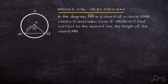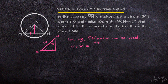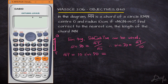Question 48 in the same year, 2016. We are given MN as the chord of a circle with center O and radius 10 cm. We are asked to find the length of the chord MN. We introduce a point T on the diagram and can see a right-angle triangle with hypotenuse 10 and an angle of 70 degrees. Using trigonometry, sin 70 equals opposite over hypotenuse, where the opposite is MT and the hypotenuse is 10. So MT equals 10 sin 70, which gives us 9.3969.